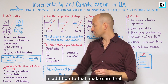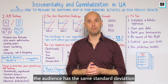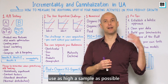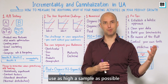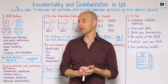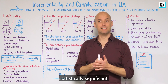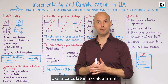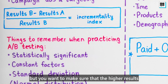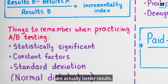In addition to that, make sure that the audience has the same standard deviation. My tip: use as large a sample as possible so it will be normally distributed. And try to make the results statistically significant — use a calculator to calculate it — but you want to make sure that the higher results are actually better results.